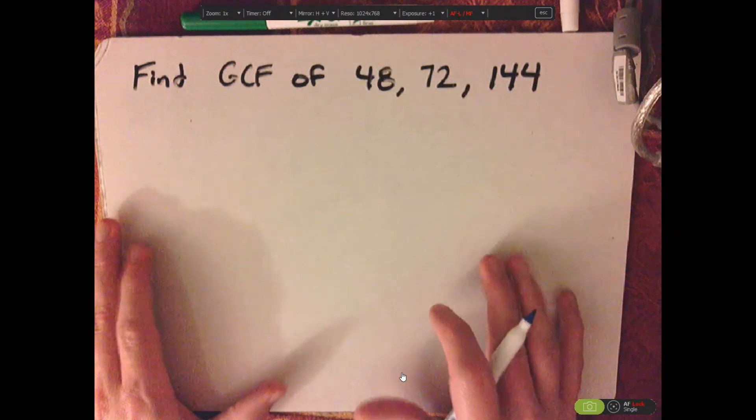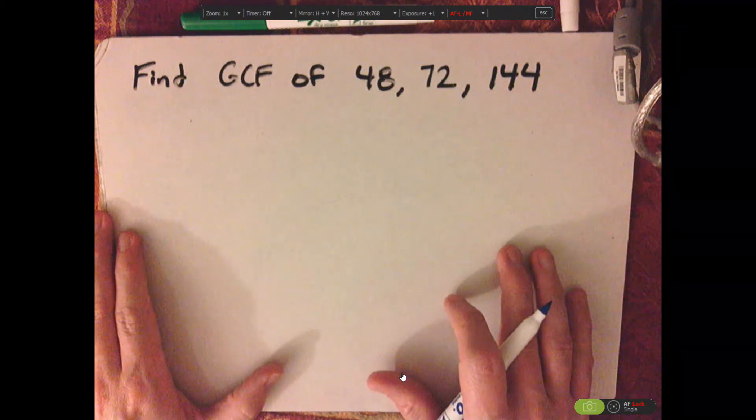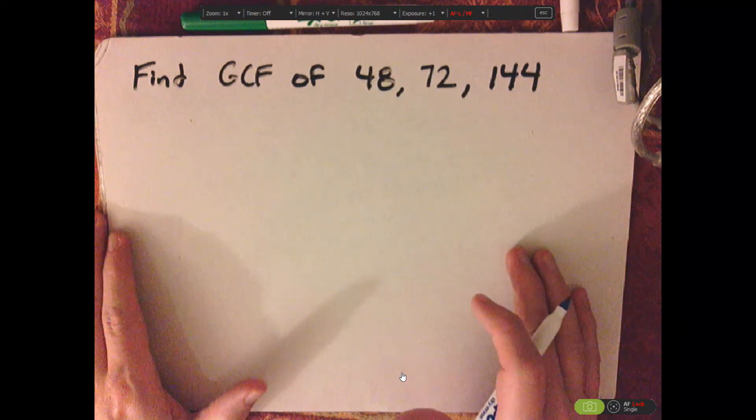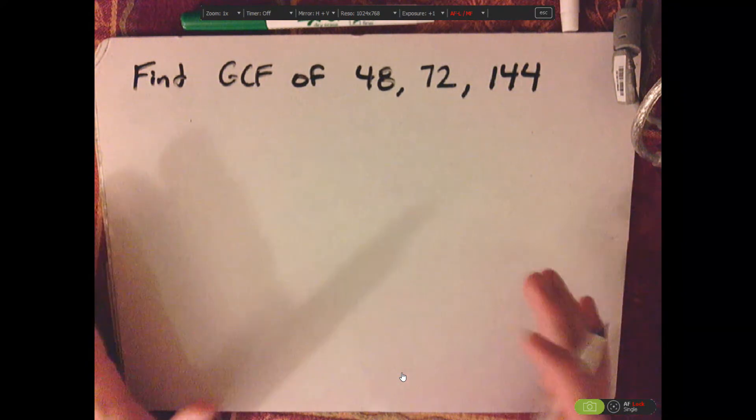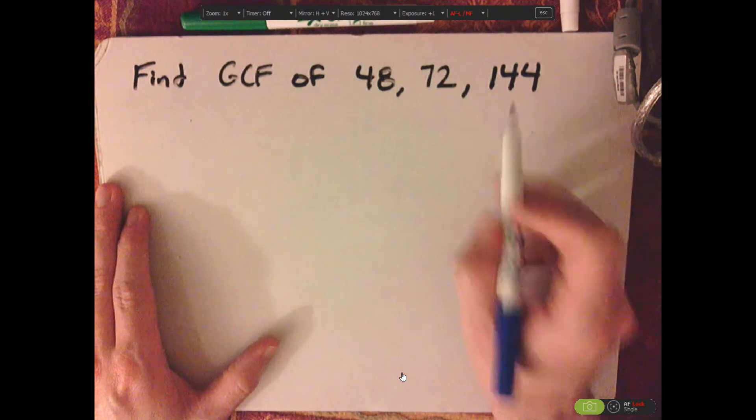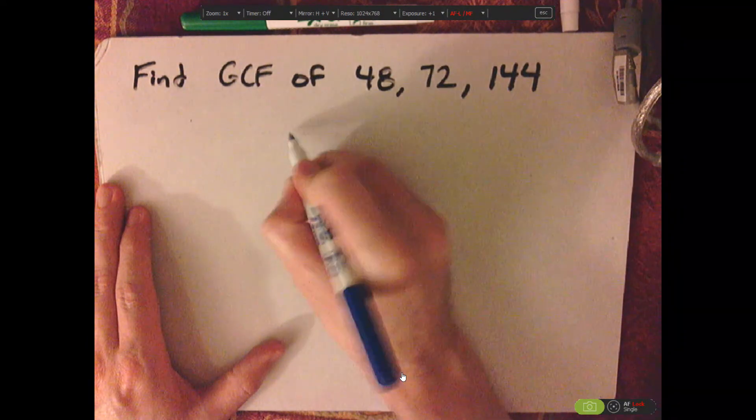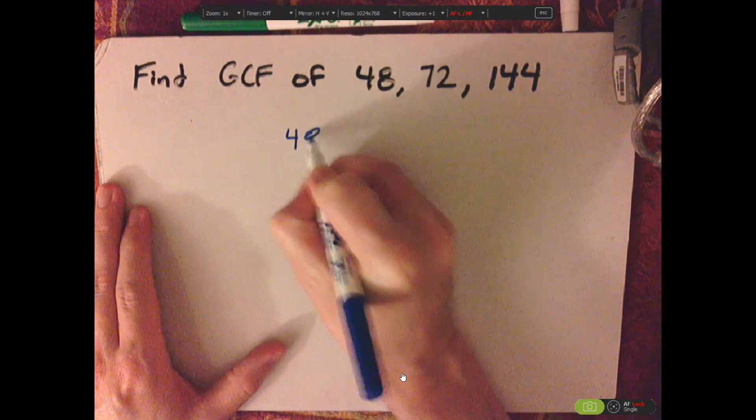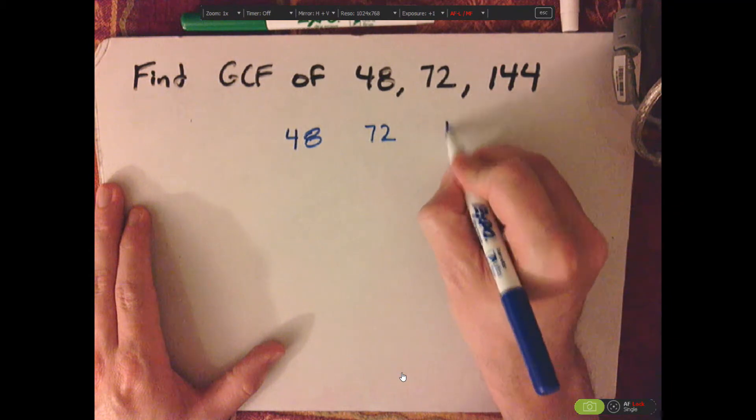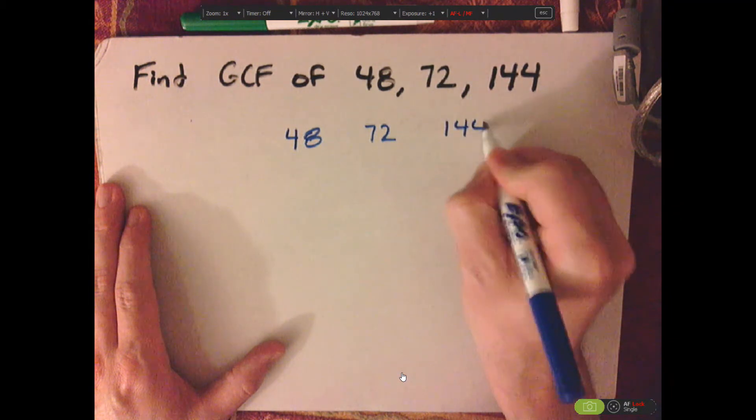Hi, I'm JD, and what we're going to be doing today is finding GCF. I'm going to show you how to use short division to find GCF with three different numbers. So we have 48, 72, and then 144.